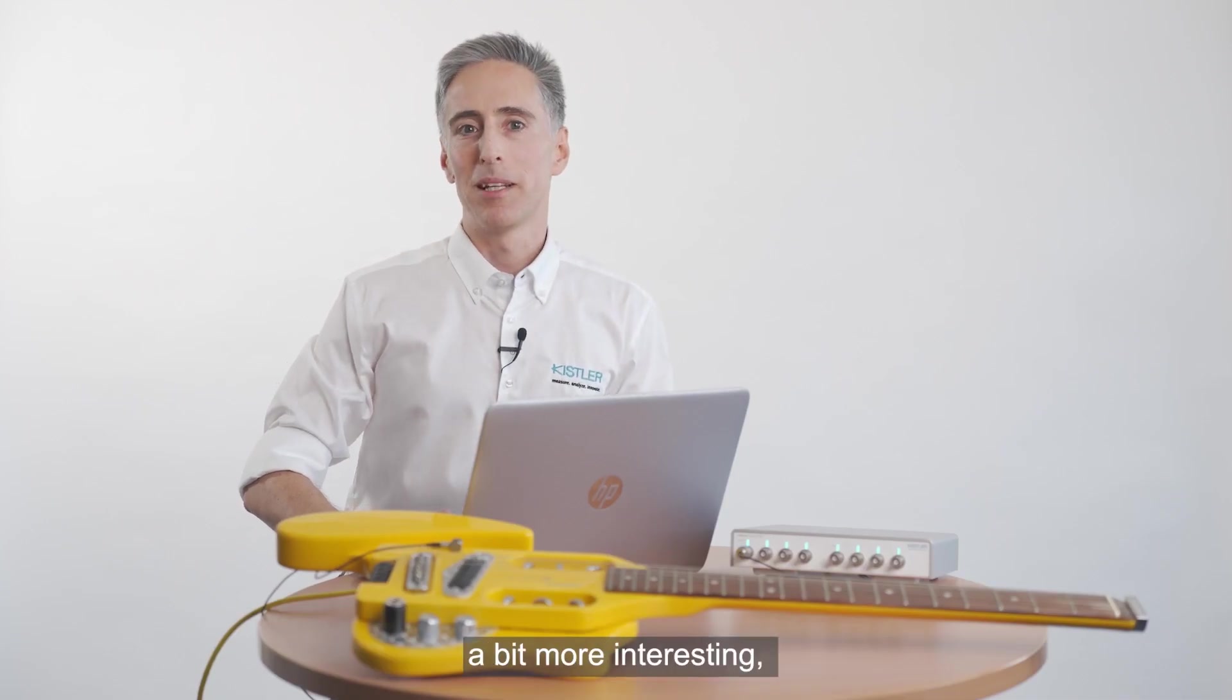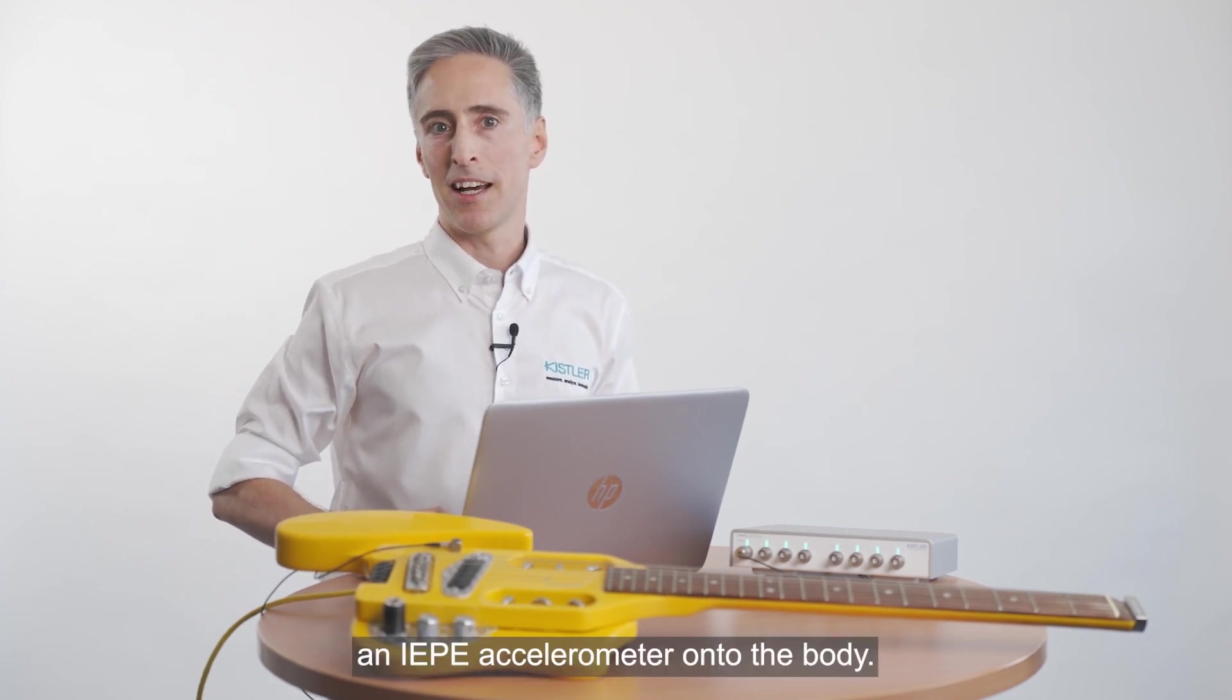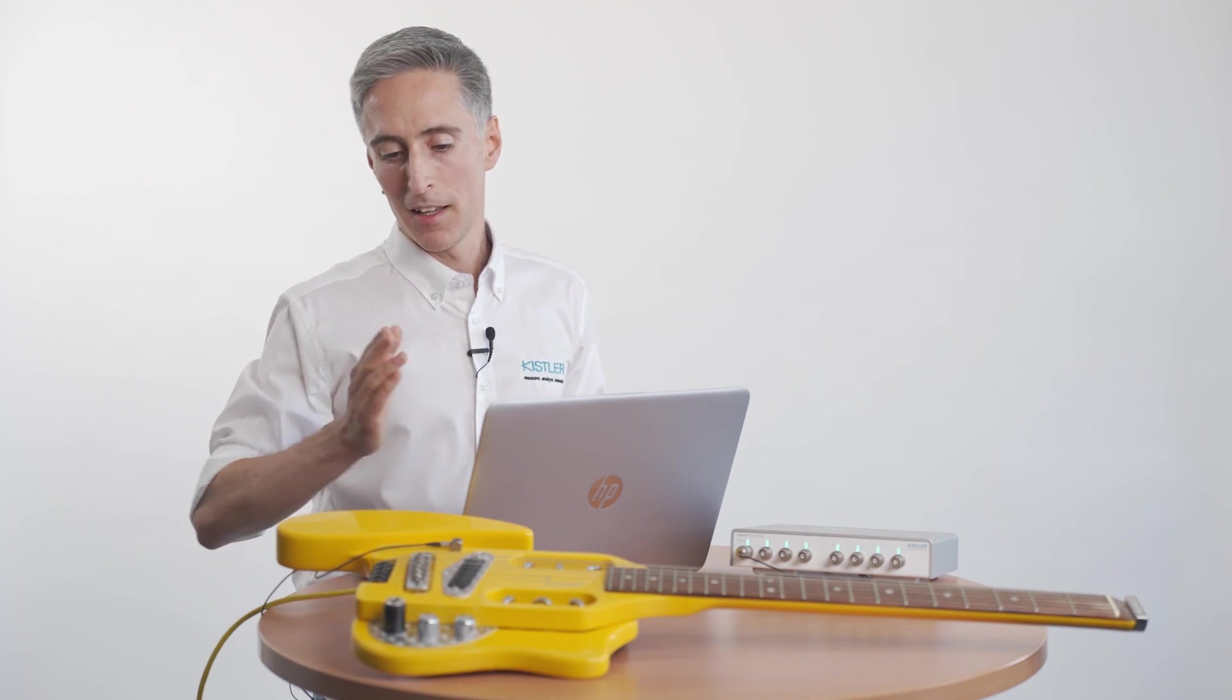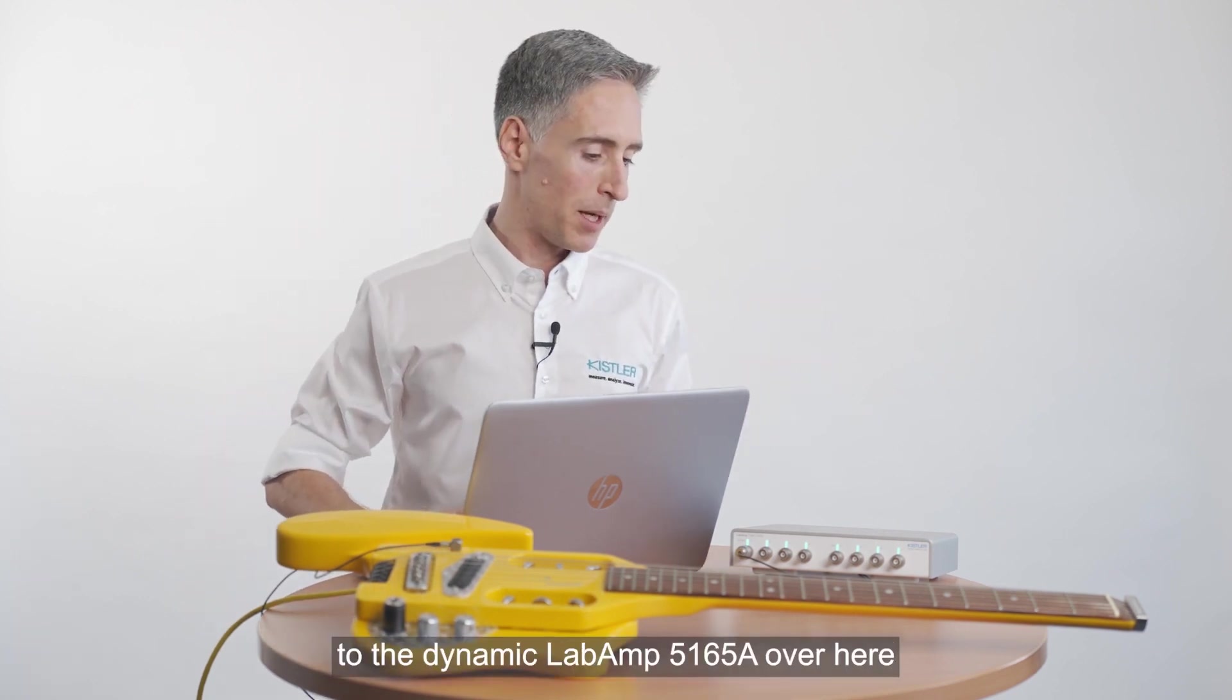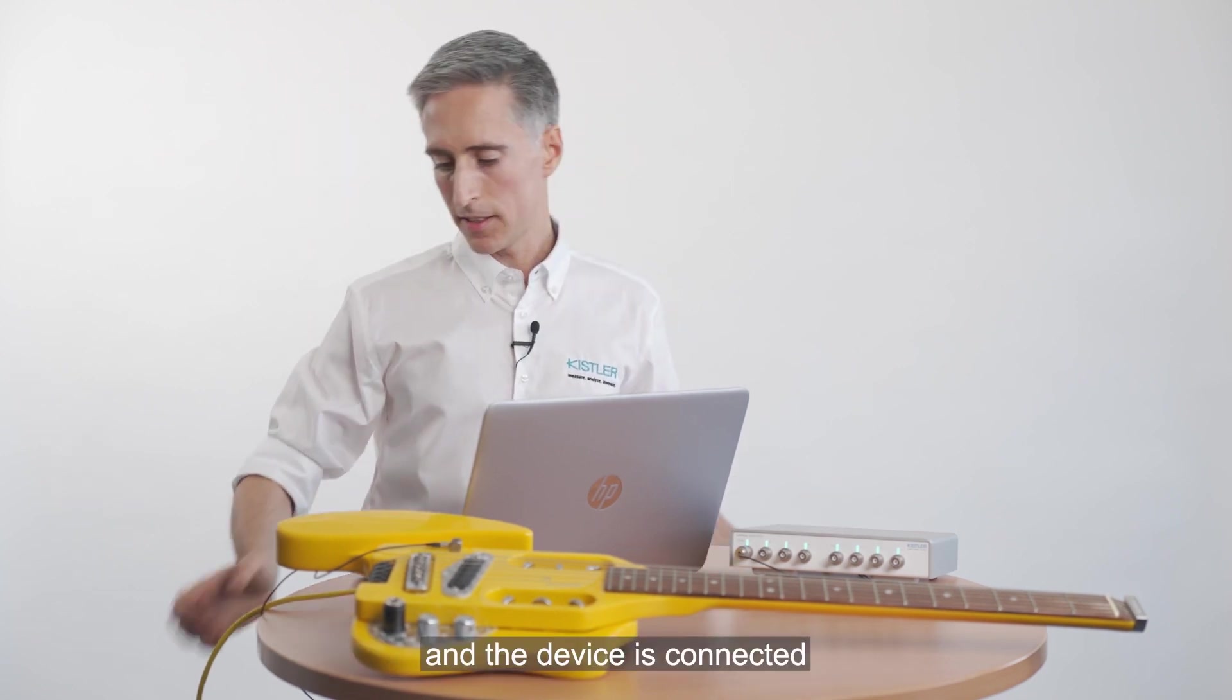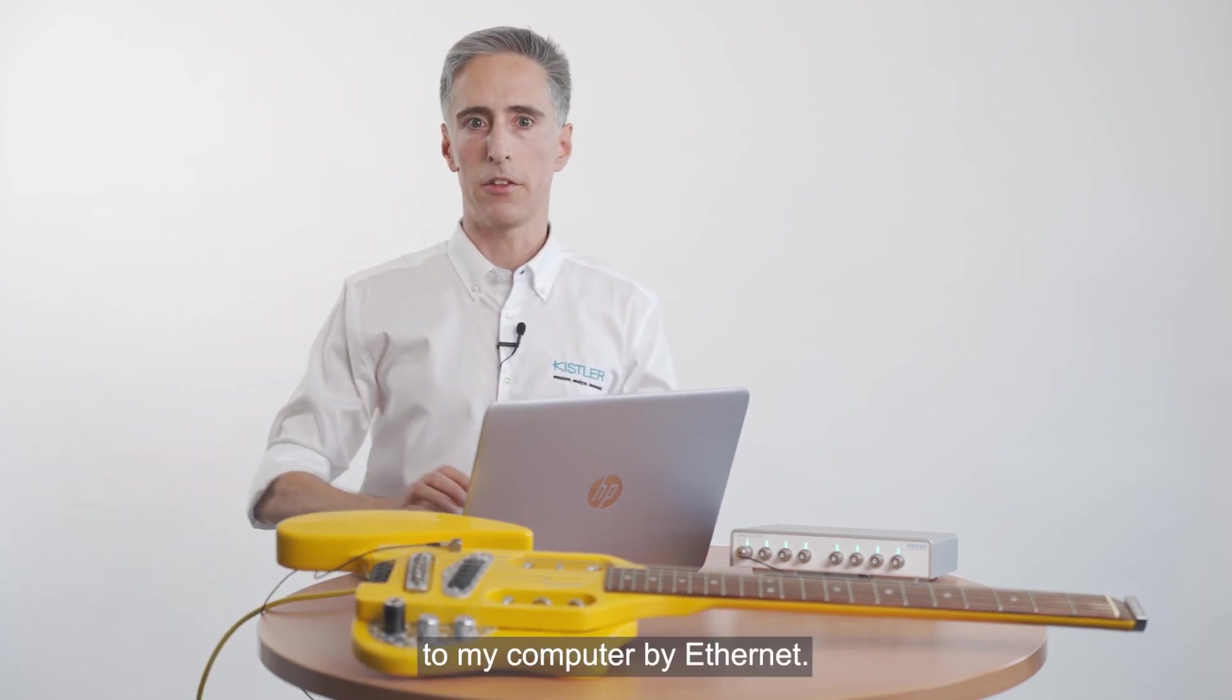To make the example a bit more interesting, I took an electric guitar and mounted an IEP accelerometer onto the body. The sensor is directly connected to the dynamic lab amp 5165A over here and the device is connected to my computer by ethernet.